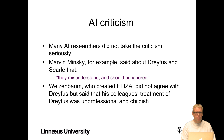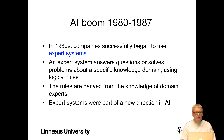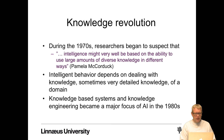After the first AI winter, things started looking more optimistic. In the 1980s, companies successfully began using expert systems — systems that answer questions or solve problems in a specific knowledge domain using logical rules derived from domain experts. But during the 1970s, researchers began to suspect that intelligence might be based on the ability to use large amounts of diverse knowledge in different ways.